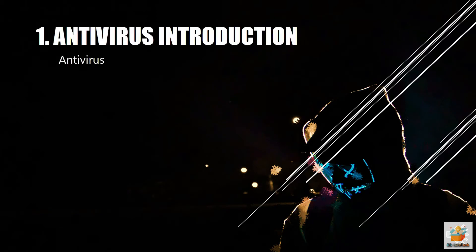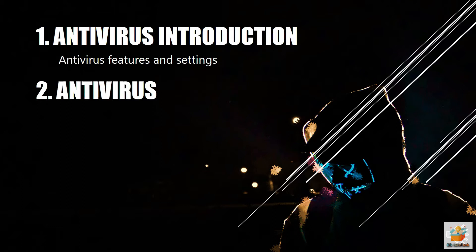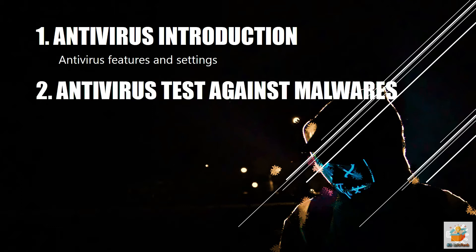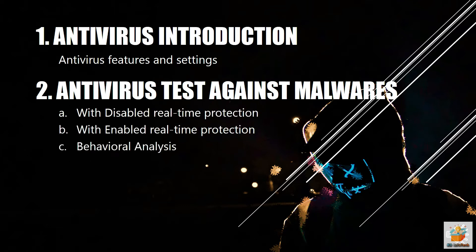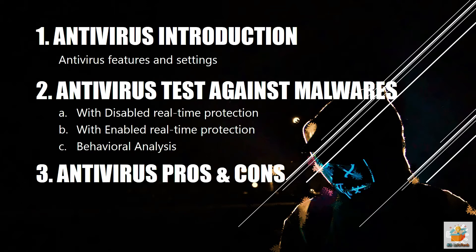In the first section, we will discuss the features and settings of the antivirus. In the second section, we will perform an antivirus test on different malware samples. First test after disabling real-time protection, second test after enabling real-time protection, and third test is behavioral analysis test. And in the last section, we will talk about the pros and cons of the antivirus, on the basis of tests performed and features provided.